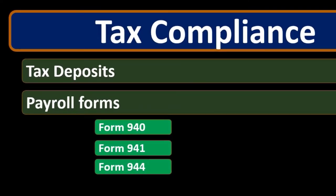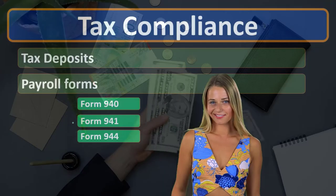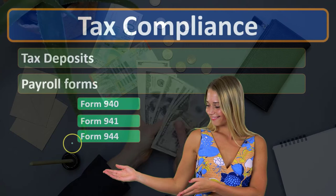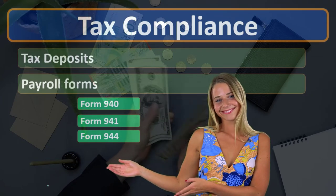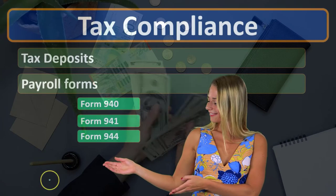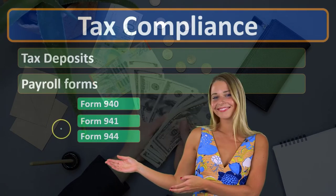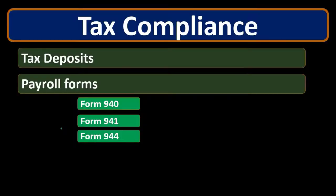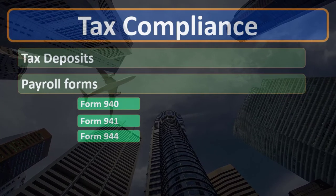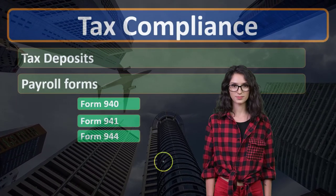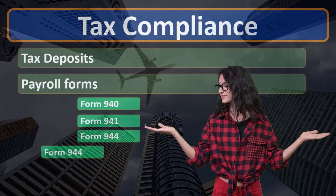The Form 944 is an option for smaller companies. Think of the 940 and 941 as your default forms for payroll taxes. The 944 gives less frequency of payment — the 941 must be filed quarterly, while the 944 allows small companies to limit reporting requirements and report yearly instead. The two forms to keep in mind are the 941 quarterlies and then the 940.